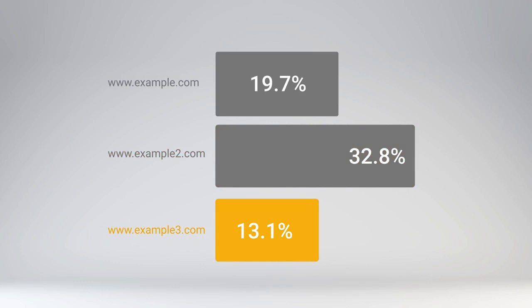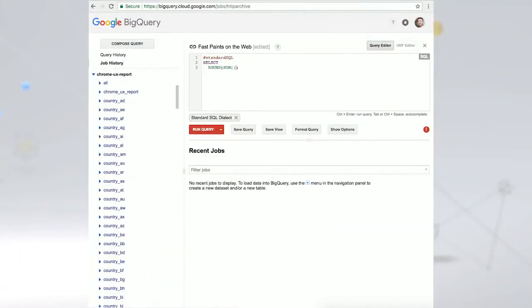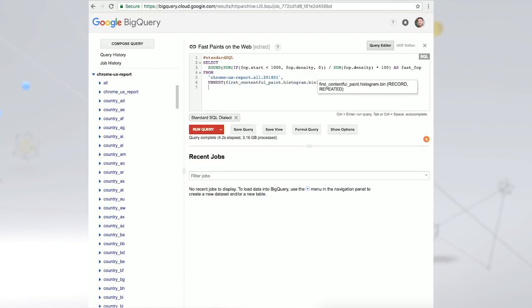So what can this data tell us about the state of the web? If we aggregate the densities for all origins, where the start time is less than 1,000 milliseconds, that will tell us the approximate density of fast paint experiences on the web. In a few lines of SQL, we learn that it's 36%, meaning a third of first contentful paints occur in less than a second.